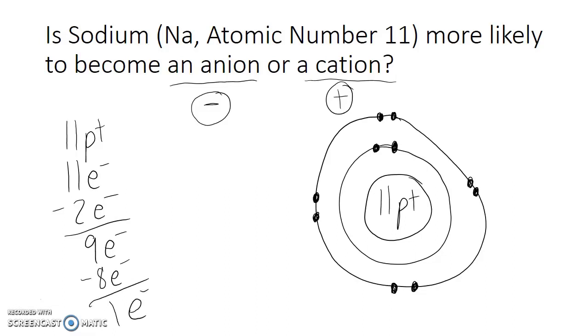...leaving us with one electron. This one electron on its own has to go in the third electron shell, an electron shell that has room for seven electrons.